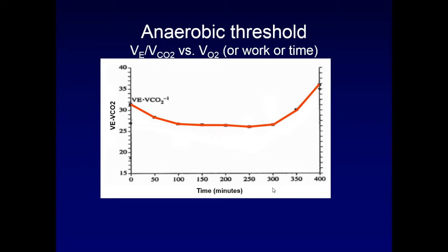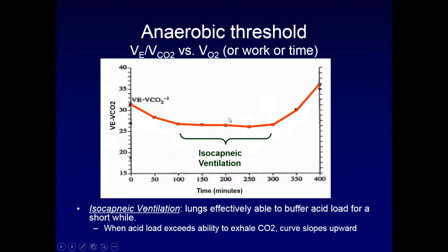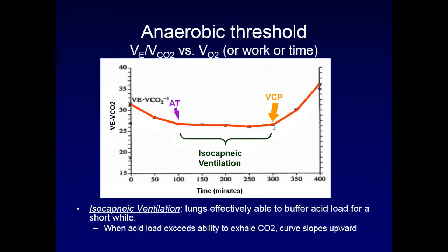Taking a closer look at the VE/VCO2 at anaerobic threshold: as mentioned, it comes down, hits a nadir, plateaus, and then comes back up. This plateau region is defined as isocapnic ventilation — the lungs are, for a short while, able to effectively buffer the acid load created in anaerobic metabolism. When the acid load exceeds the lung's ability to exhale carbon dioxide, you see the upward inflection. Two key points on this graph are the anaerobic threshold (AT) and the ventilatory compensation point (VCP).